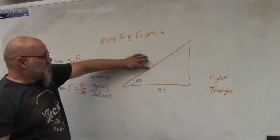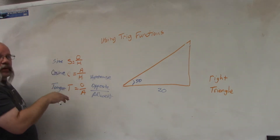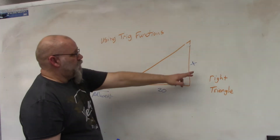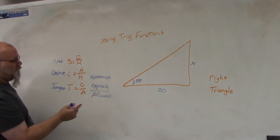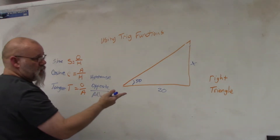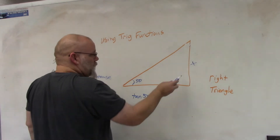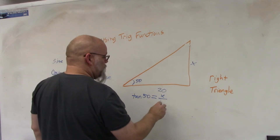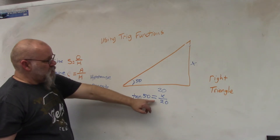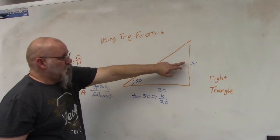With these two numbers I can find this side or I can find the hypotenuse, depending on which function I want to use. If I want to find this side over here, I have the opposite side and the adjacent side with an angle. Opposite and adjacent means I use tangent. So the equation would be: tangent of 50 equals x over 20, so tangent of 50 times 20 gives me that side.